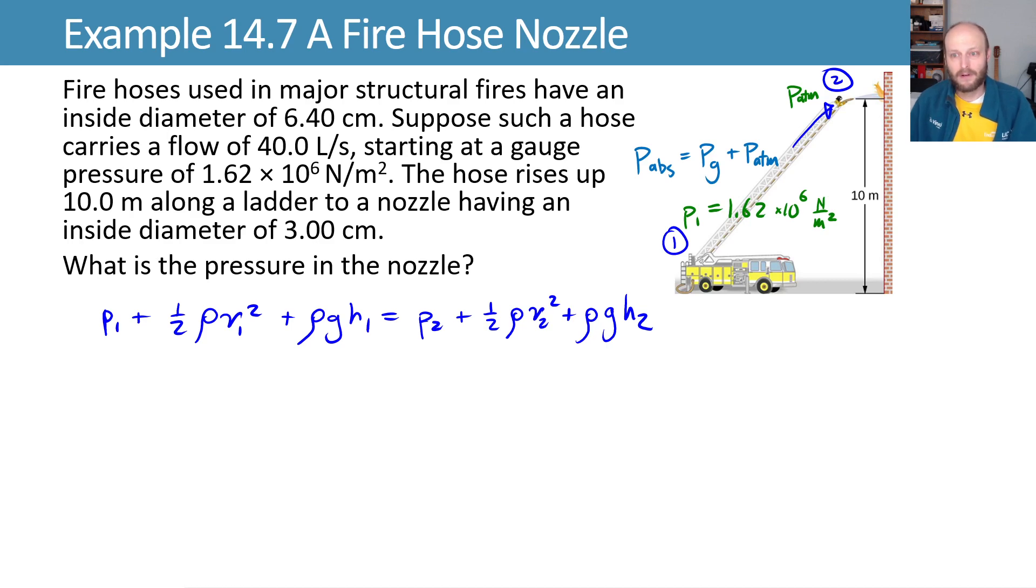We know that the volumetric flow of the hose from the problem statement is 40 liters per second. So we can write our volumetric flow as A₁v₁, and we can solve for that average linear speed of flow by dividing by A₁ and getting v₁ equals Q over A₁, which gives us 12.4 meters per second once we plug in πr² as our area.